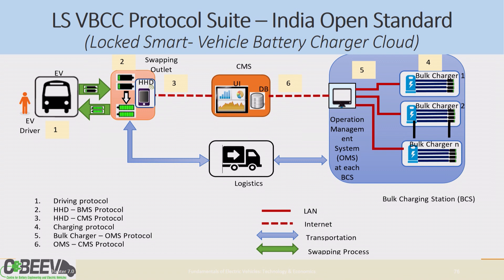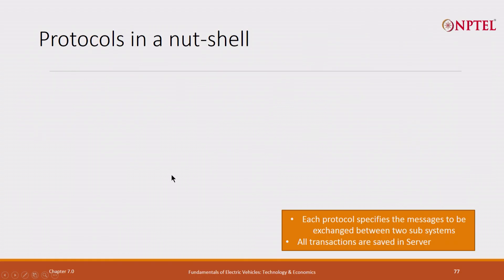This is what will make the lock smart battery on the cloud. There are bulk chargers and there is a swapping outlet. At the swapping outlet, use your mobile phone to lock the battery — that is what is done.